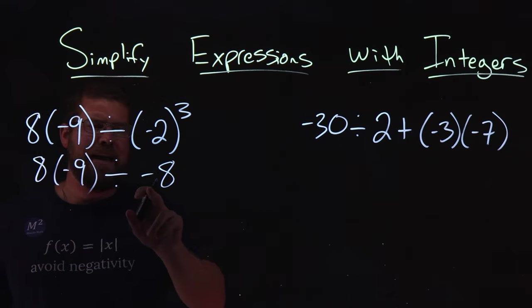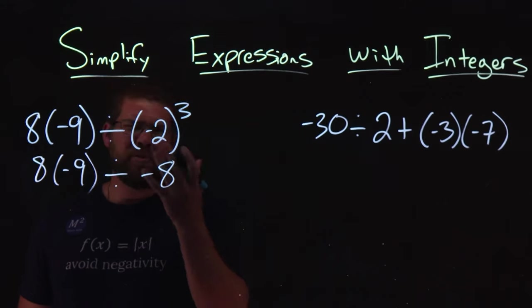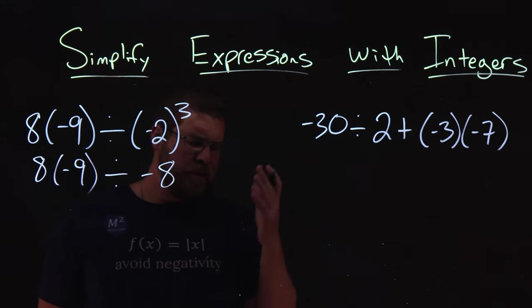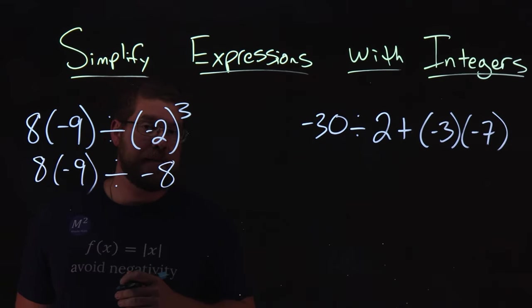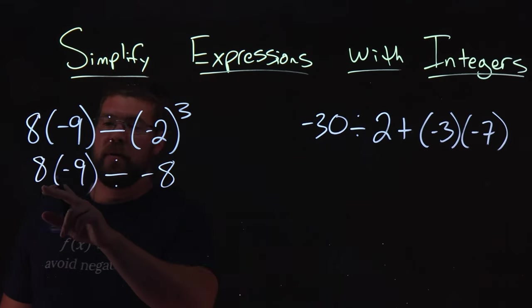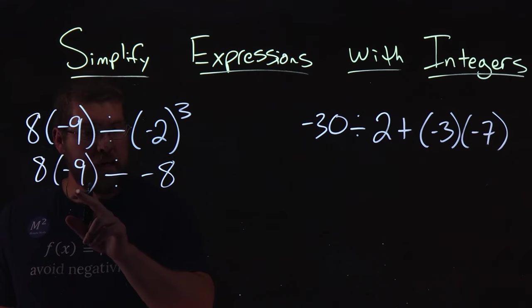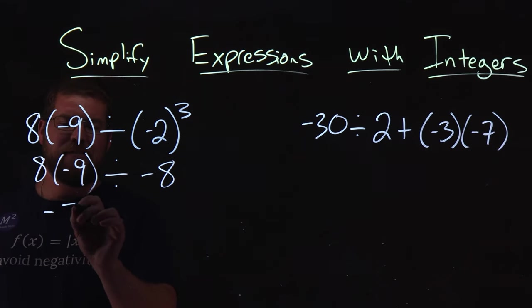Well, now we have multiplication and division. Which one comes first? Multiplication and division are the same rank, so we have to go now left to right with all of them. So starting from the left, eight times negative nine comes out to be a negative 72.